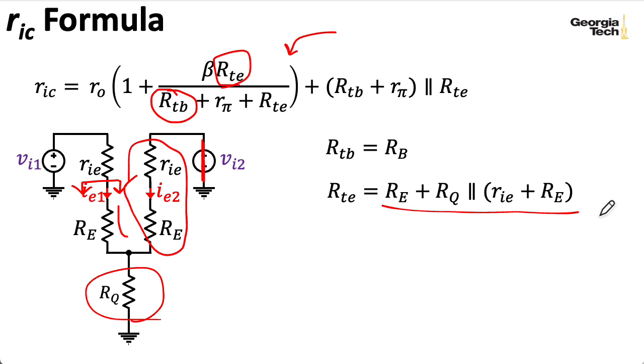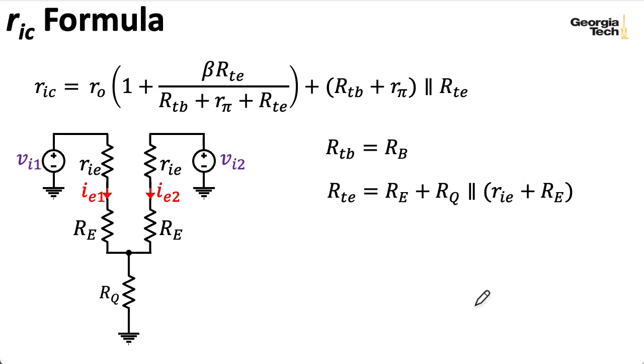Note that if we let RQ go to infinity, this basically disappears, and we wind up with the same expression for RTE we had in the previous lecture.